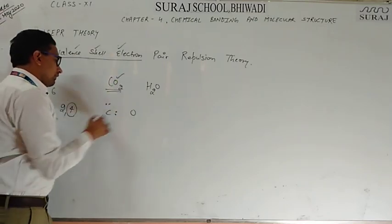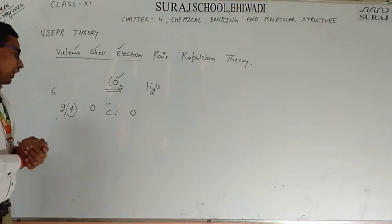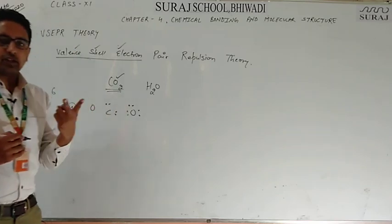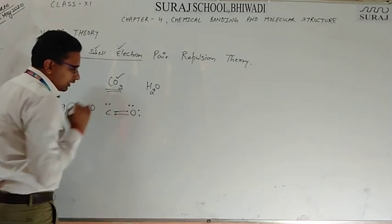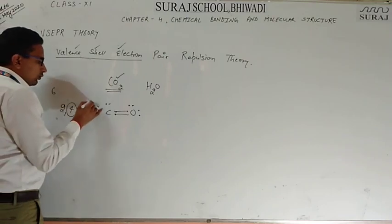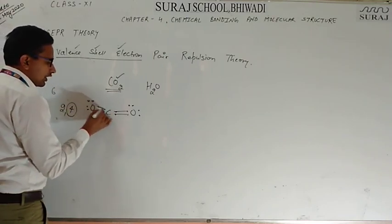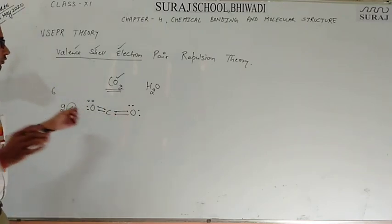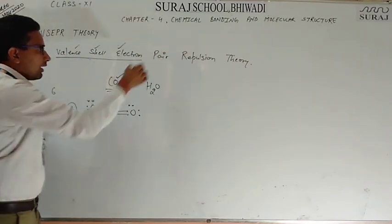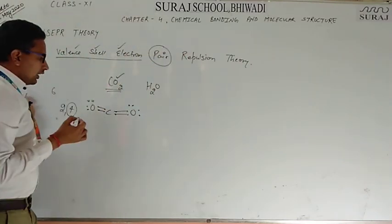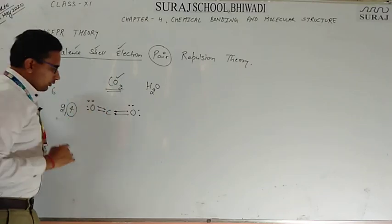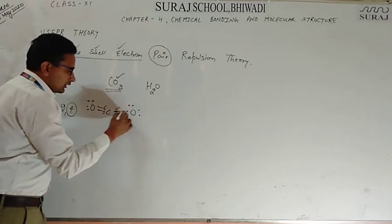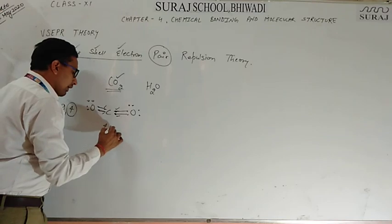Oxygen has 6 electrons: 1, 2, 3, 4, 5, 6. It can complete this by sharing two electrons with carbon. The same for the second oxygen — it also has 6 electrons and shares two electrons. So carbon has all four electrons shared — two shared here and two shared here, so nothing is left. In VSEPR theory, we find bond pairs: here two electrons are bonded and here two electrons are bonded, making pairs 1, 2, 3, and 4. Four bond pairs.